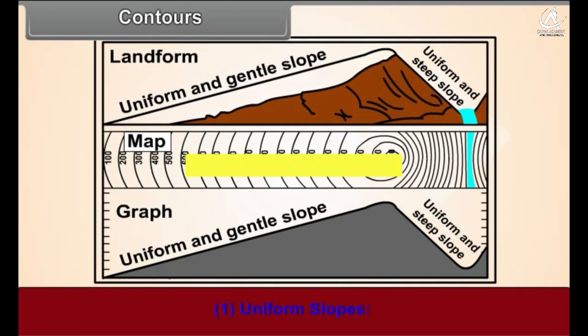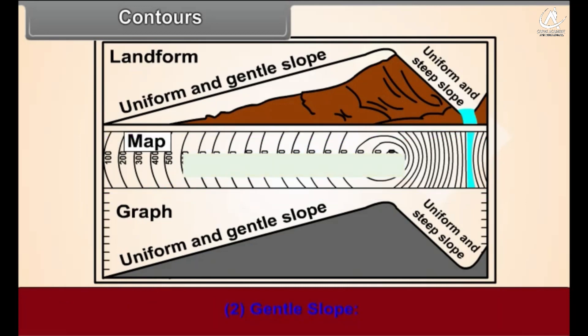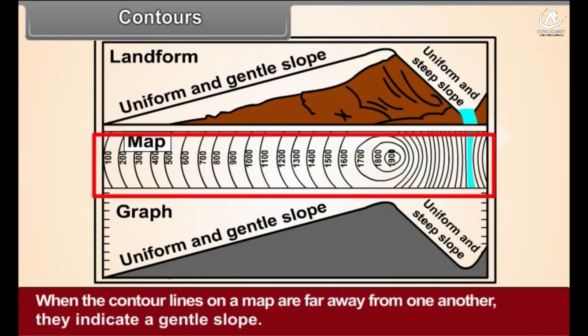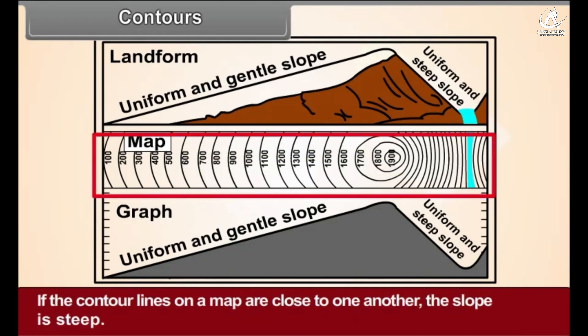Number one: Uniform slope. Equidistant contour lines on a map indicate a uniform slope. Number two: Gentle slope. When the contour lines on a map are far away from one another they indicate a gentle slope. Number three: Steep slope. If the contour lines on a map are close to one another the slope is steep.